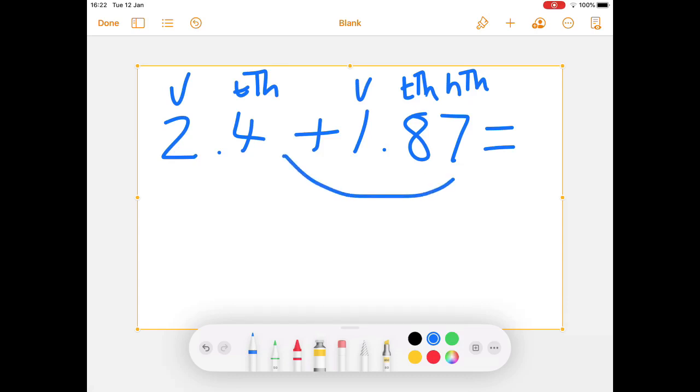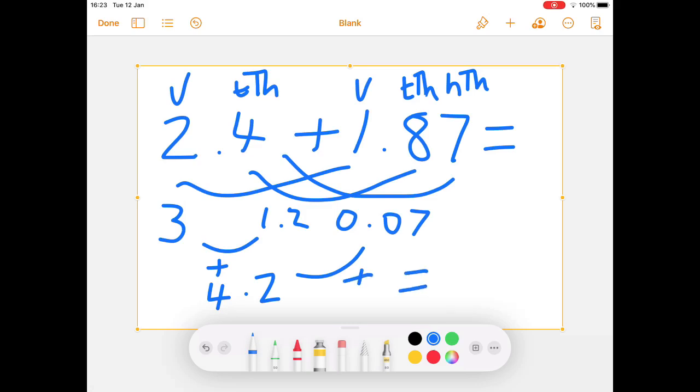So I'm going to partition my hundredths first. So I've got seven hundredths and zero hundredths, which gives me 0.07, which is seven hundredths. And then my tenths, eight tenths and four tenths. And if I add them together, that actually gives me 1.2. And then I'm going to add my units, and that gives me three. And now I'm going to add those two together. And three add 1.2 is 4.2. And then if I add the 4.2 to the 0.07, it gives me 4.27. So I've got the same answer both ways.